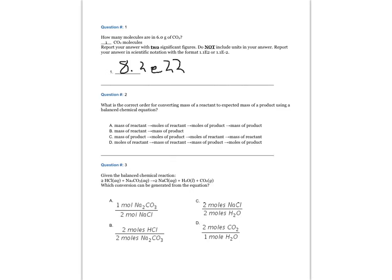Question number two. What is the correct order for converting mass of a reactant to expected mass of a product using a balanced chemical equation? The answer is A: mass of reactant to moles of reactant to moles of product to mass of product. Use molar mass to convert from mass to moles, use the balanced chemical equation to convert from moles of reactant to moles of product, and then use molar mass to convert from moles of product to mass of product.